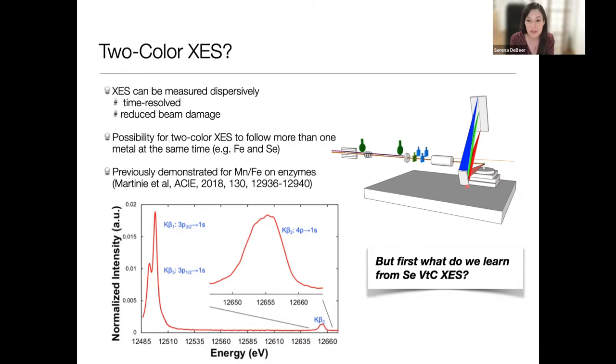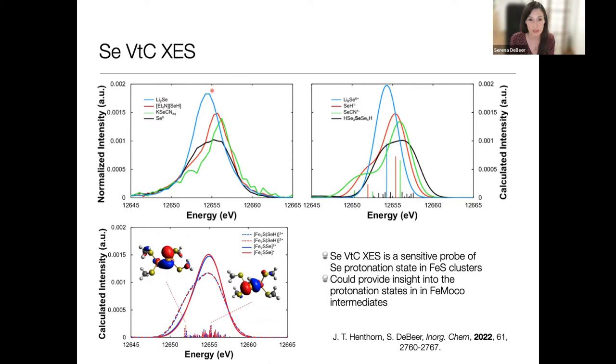But we wanted to explore what can we get out of selenium valence emission. There have been really nice demonstrations of doing two-color emission by Ryan Mori and Chris Pollock on manganese and iron enzymes. I think we'd learn something from the selenium valence-to-core. When we look at simple selenium references like elemental selenium or potassium selenocyanide, you can see clear differences in the valence-to-core, and you can readily predict these. What's nicer is when we look at iron-sulfur clusters, we see shifts in the valence-to-core upon protonation. These are fictitious calculations, but we believe that one of the first steps in the cycle involves protonation of one of those bridges.